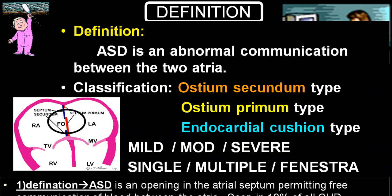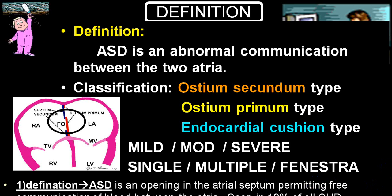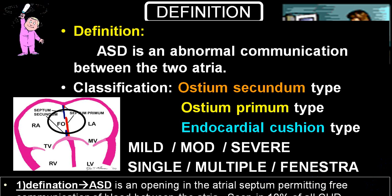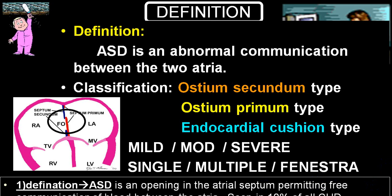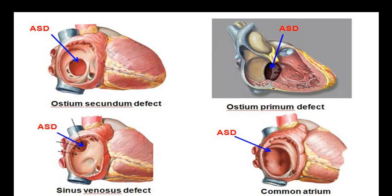ASD accounts for almost 10% of all congenital heart disease. Because left atrial pressure is higher, blood flows from the left atrium into the right atrium — this is why ASD is called a left-to-right shunt.